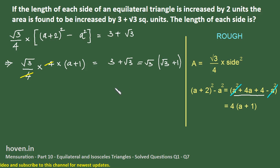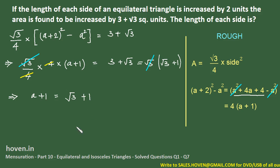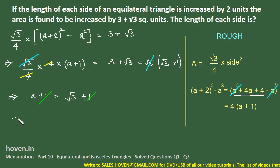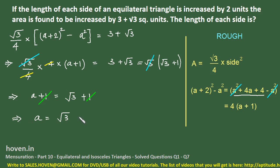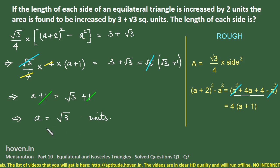We can now cancel √3 from both sides, leaving a + 1 = √3 + 1. Removing 1 from both sides gives a = √3. So the length of the side of the equilateral triangle is √3 units.